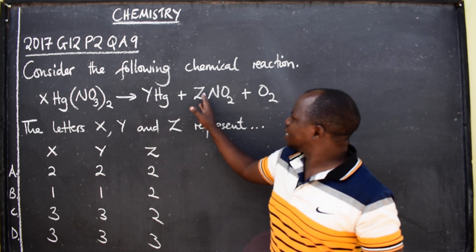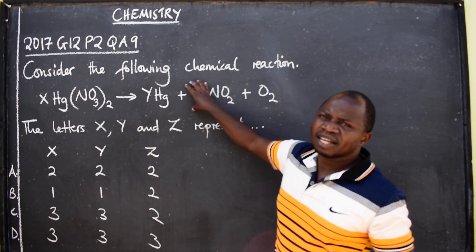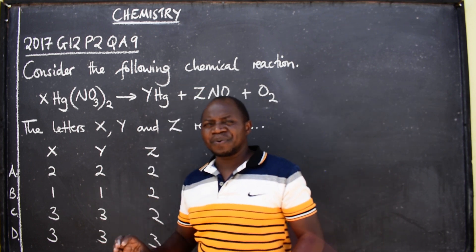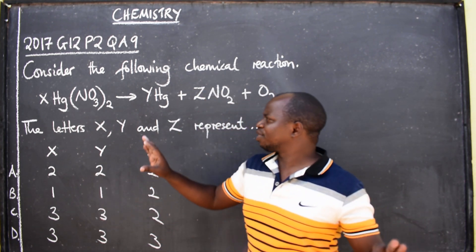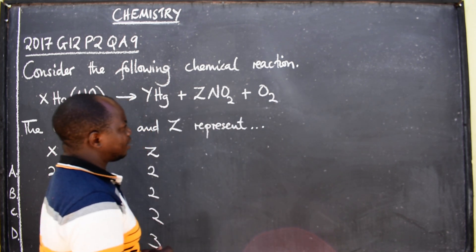They want to know what these three letters represent. They are asking you to balance the equation. Once you balance the equation you are going to find the correct answers. So let's try to balance the chemical equation.